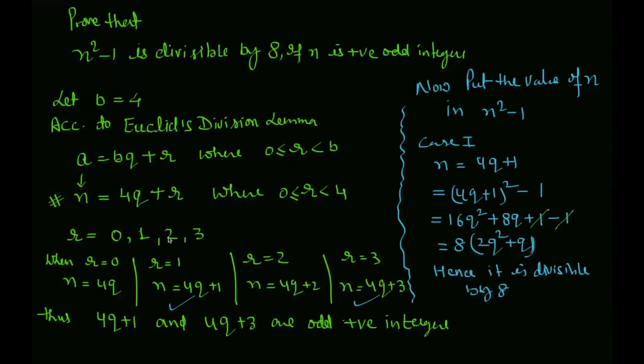n equal to 4q plus r where r is less than 4 and greater than or equal to 0. When r equal to 0, n equal to 4q. When r equal to 1, n equal to 4q plus 1. When r equal to 2, n equal to 4q plus 2. When r equal to 3, n equal to 4q plus 3.